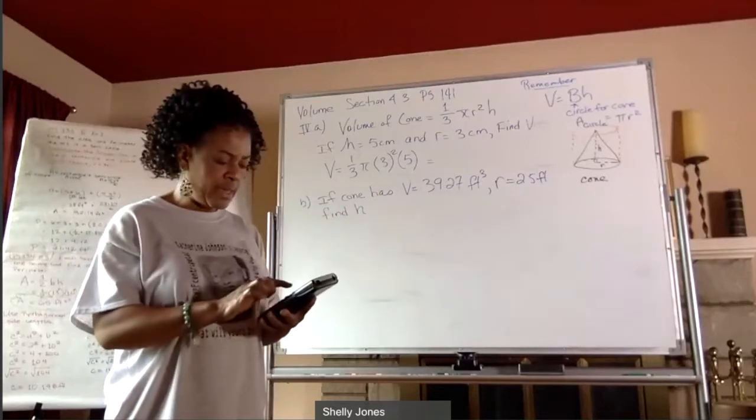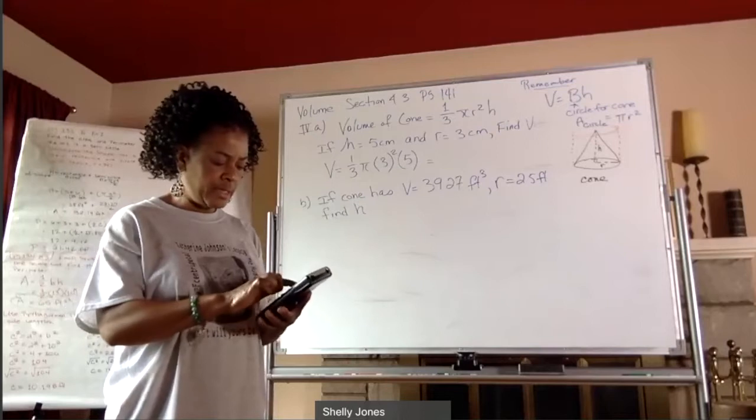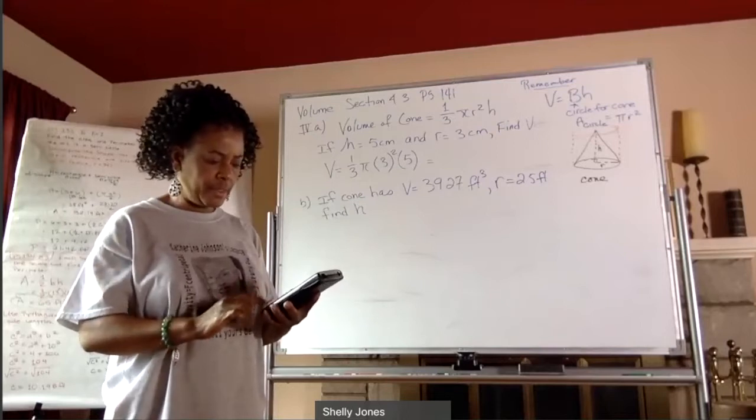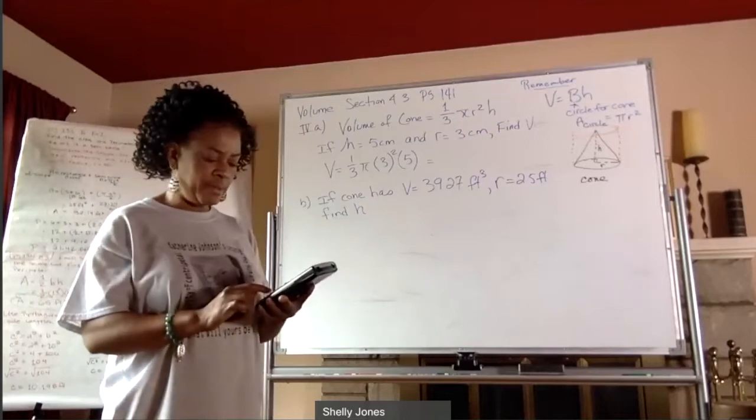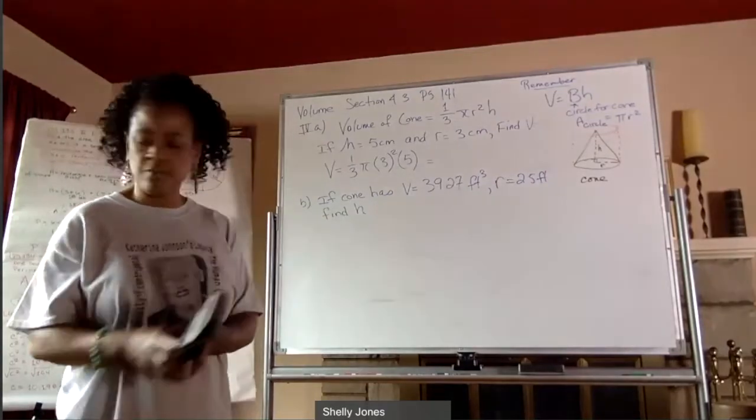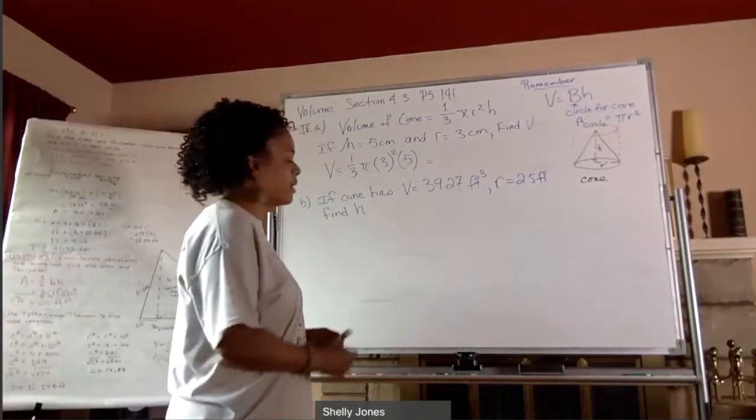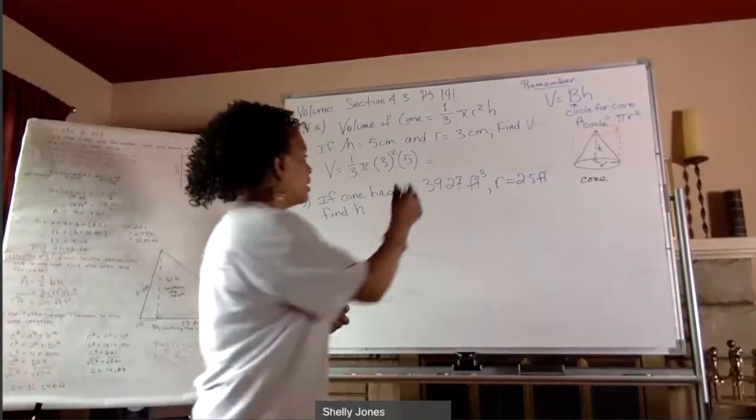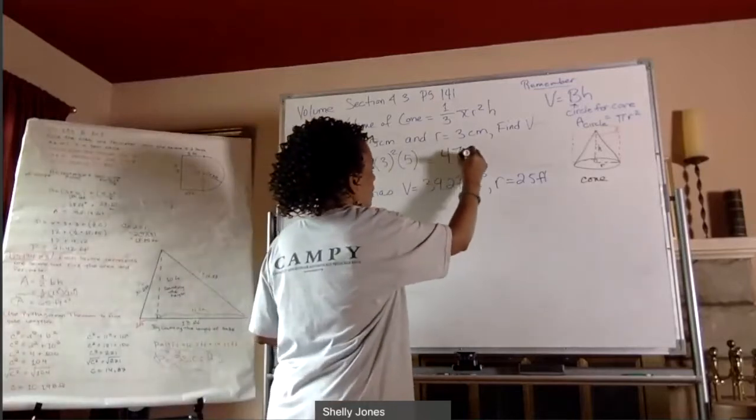So I'm going to say three squared is 9 divided by three. And I'm going to multiply that times pi. And then multiply that times five. And I have 47.1. And I'm going to round these off to the nearest tenths. So I have 47.1.